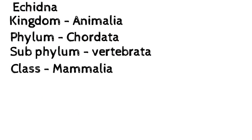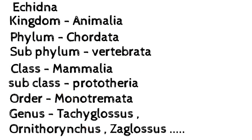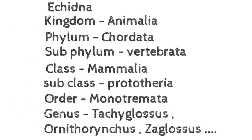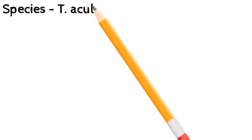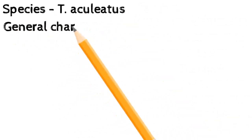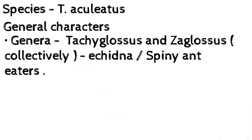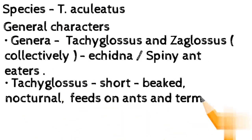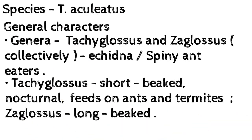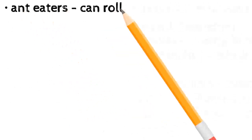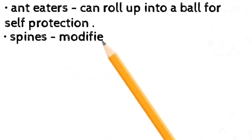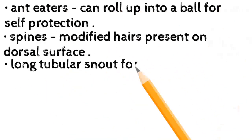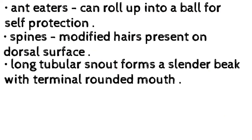Echidna — Kingdom: Animalia; Phylum: Chordata; Sub-phylum: Vertebrata; Class: Mammalia; Sub-class: Prototheria; Order: Monotremata; Genera: Tachyglossus and Zaglossus; Species: T. aculeatus. Collectively called echidna or spiny anteaters. Tachyglossus is short-beaked and nocturnal, feeding on ants and termites. Zaglossus is long-beaked and can roll up into a ball for self-protection.